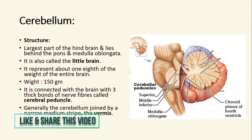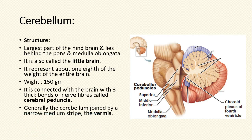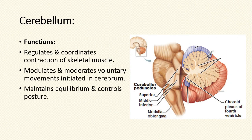Generally, the cerebellum is joined by a narrow medium stripe called the vermis. Functionally, it regulates and coordinates contraction of skeletal muscles. It modulates and moderates voluntary movements initiated in the cerebrum. Also, it maintains equilibrium and controls our bodily postures.